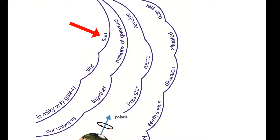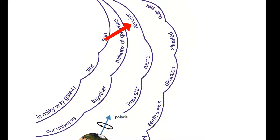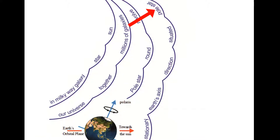Our Sun is a star in the Milky Way galaxy. Millions of galaxies together make our universe. All the stars revolve around the pole star, as the pole star is situated in the direction of Earth's axis, it appears stationary.